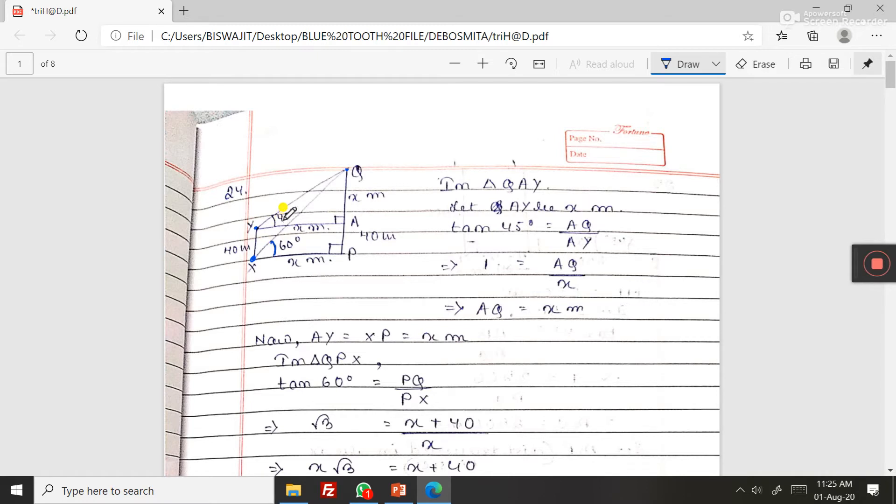The angle of elevation is 45 degrees, so this angle, if you draw one line parallel to the ground, then it is 45 degrees. Find the height of the tower PQ. PQ we have to calculate.